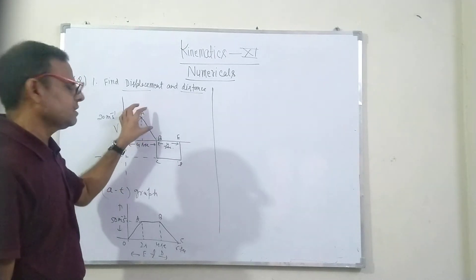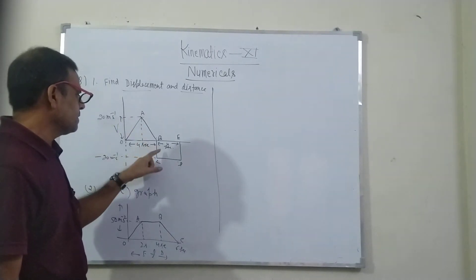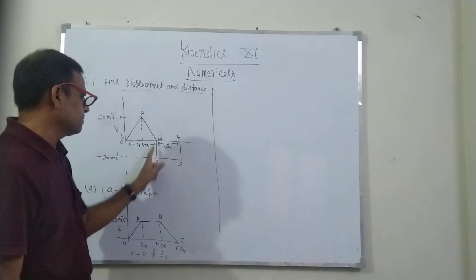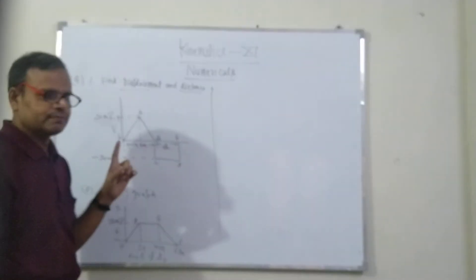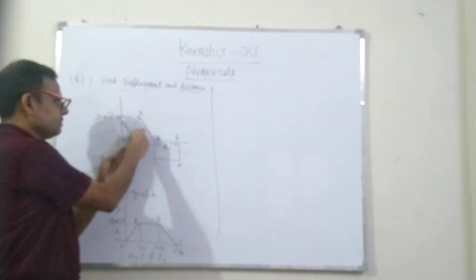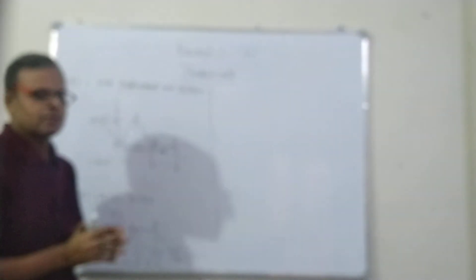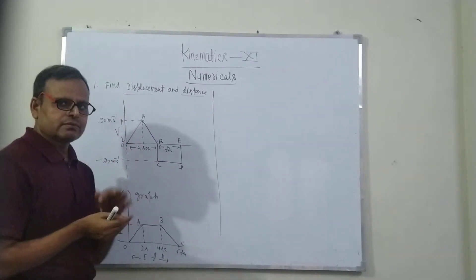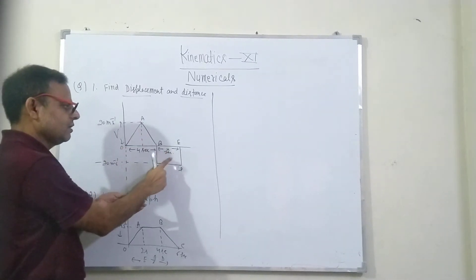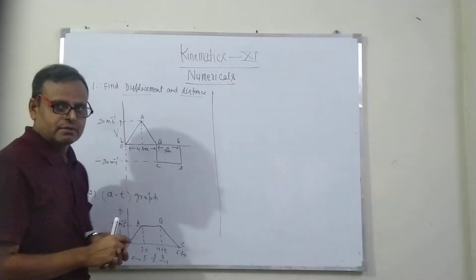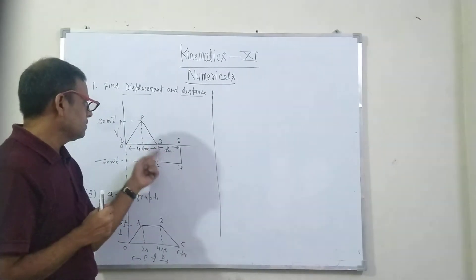Displacement in the first quadrant is the area above the axis. Displacement here will be the area of this portion, and displacement in the BCDE portion is the area below. So for total displacement, this upper area minus this lower area will give you total displacement. For distance, the area of this triangle plus the area of this rectangle — we add the lower area and upper area.